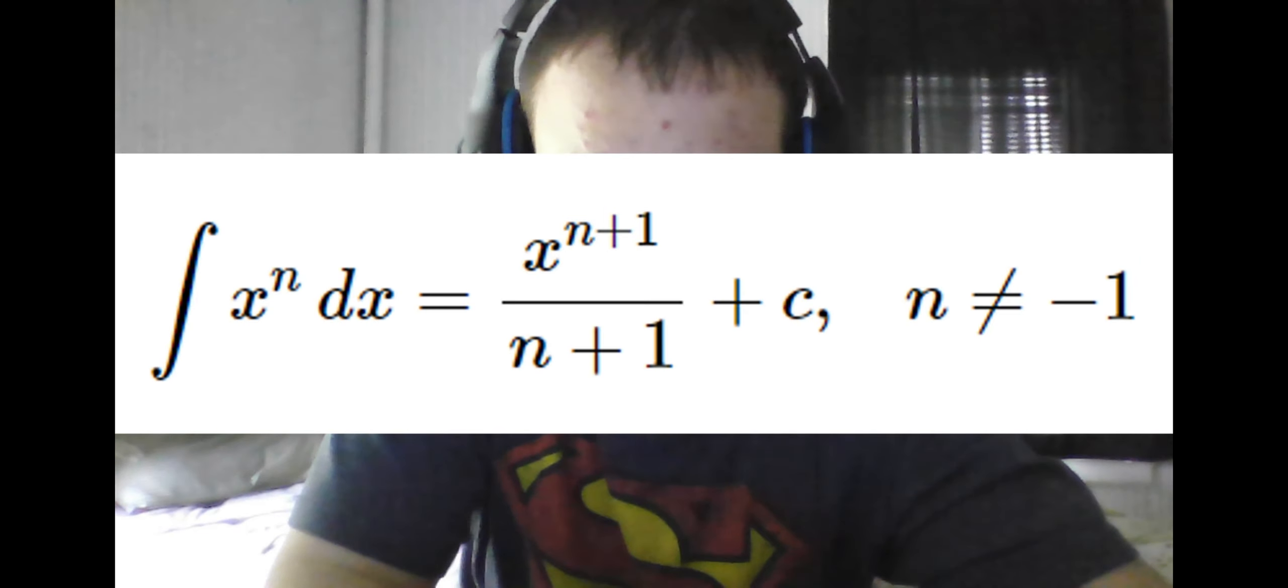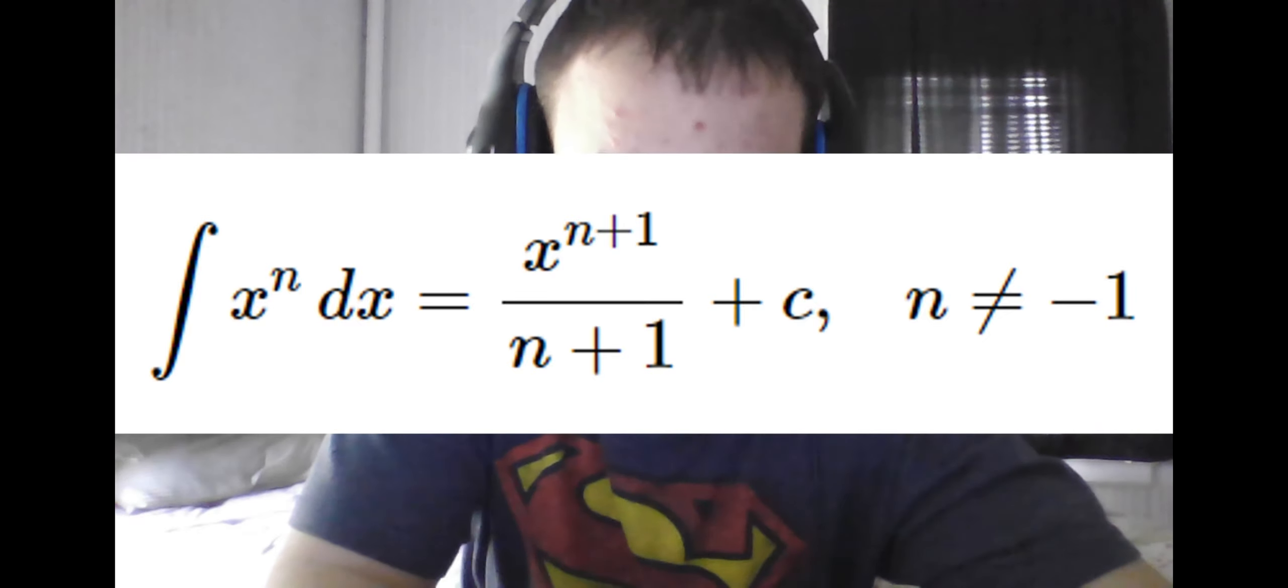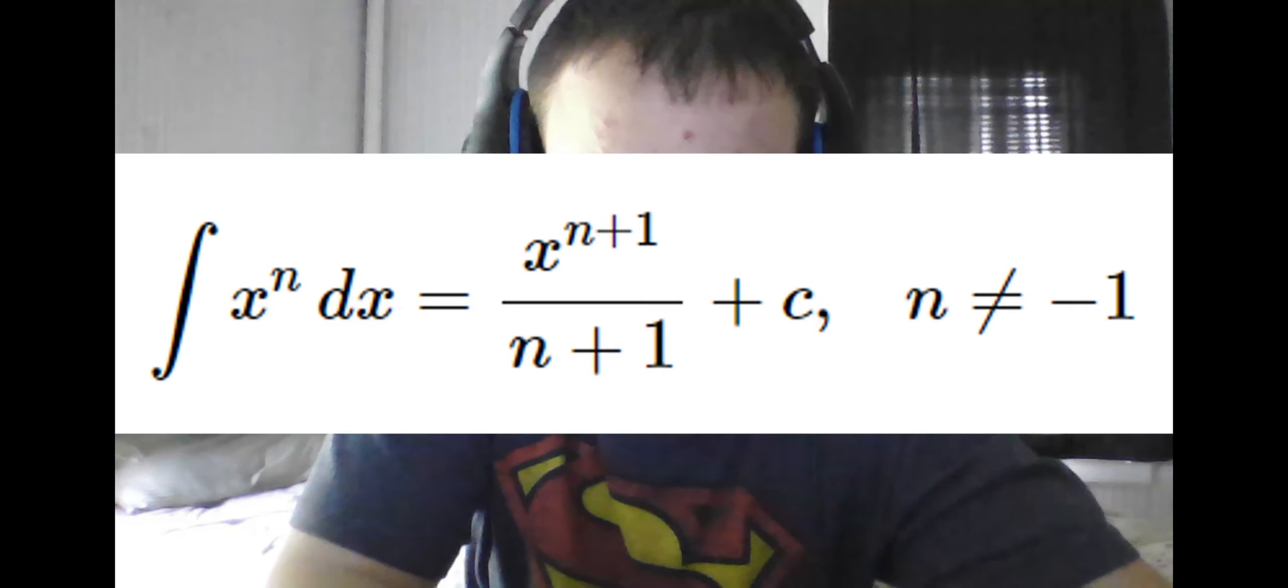In particular, since we know the derivative of x to the power of n is n times x to the power of n-1, it follows we would do this in reverse when taking the integral, so we would divide by n+1 and raise the x to the power of n+1. Lastly, we add the constant of integration, which will always exist for any indefinite integral.